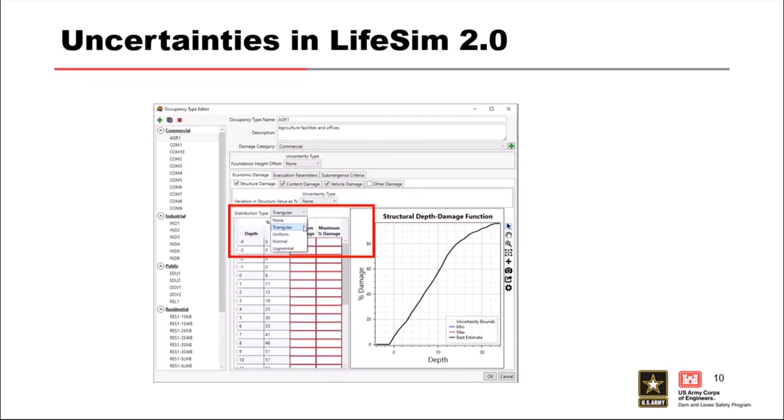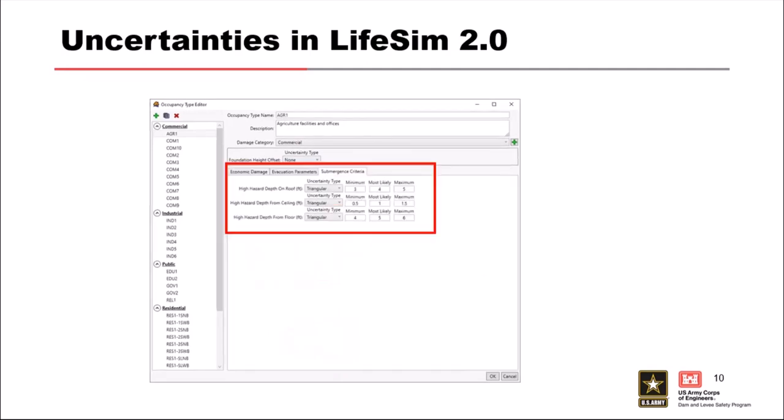If you have uncertainty in your depth-damage curve that you want to incorporate, by default most occupancy types just have a deterministic function, but you can add it in. For flood purposes, the depth relative to the ceiling is a very important threshold for life loss estimates. You can set up distributions for all these parameters — including ceiling height — to see how much it matters.